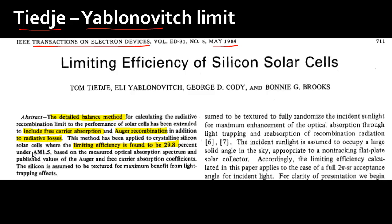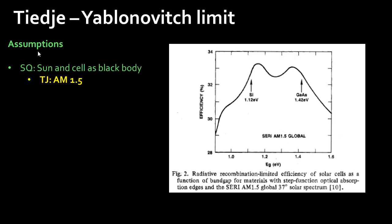Based on this, they get a limiting efficiency of 29.8% for the AM 1.5 spectrum. So instead of assuming the sun to be a black body, they use the AM 1.5 spectrum. They further say that the silicon surface is textured to benefit from light trapping effects. Let's go into what they added, step by step.